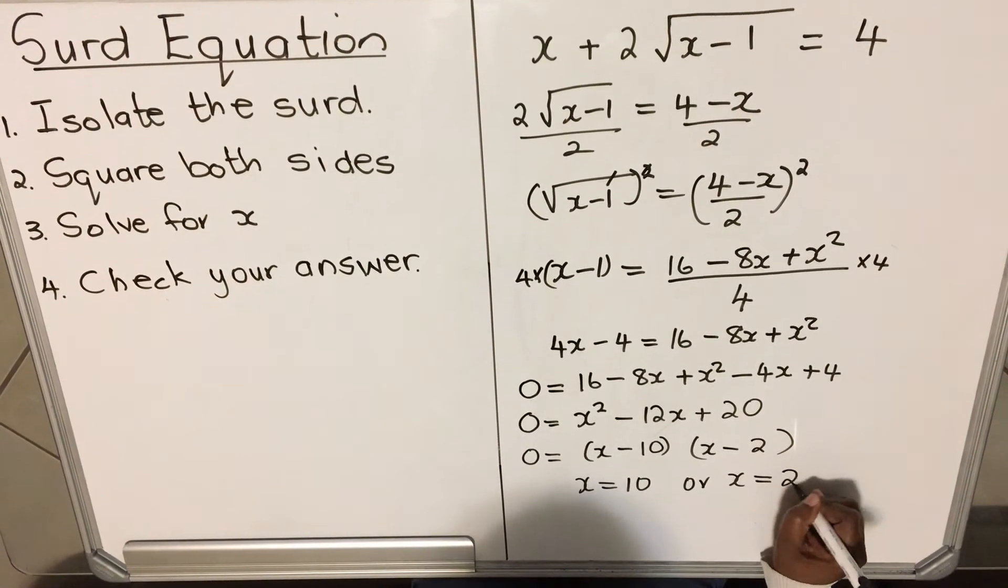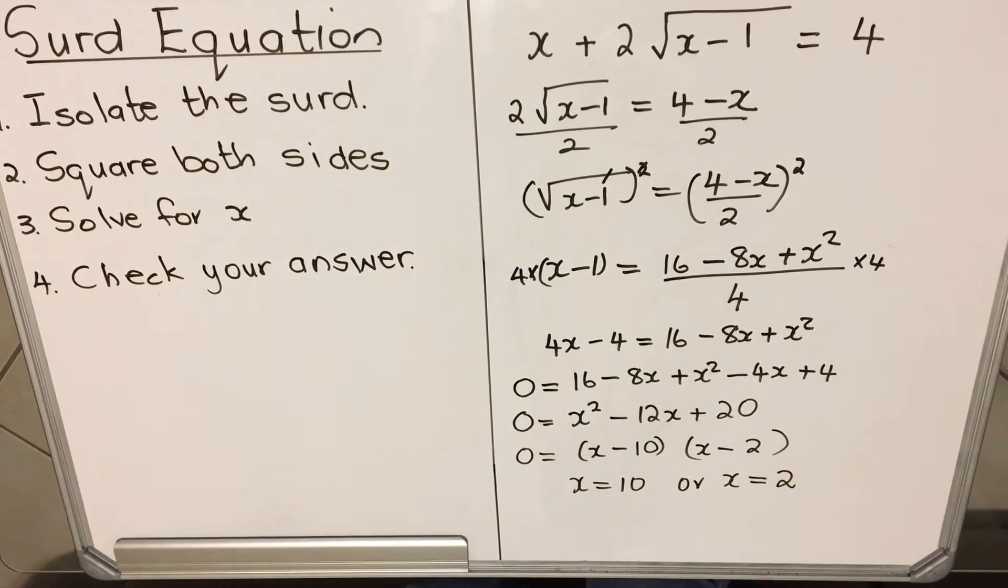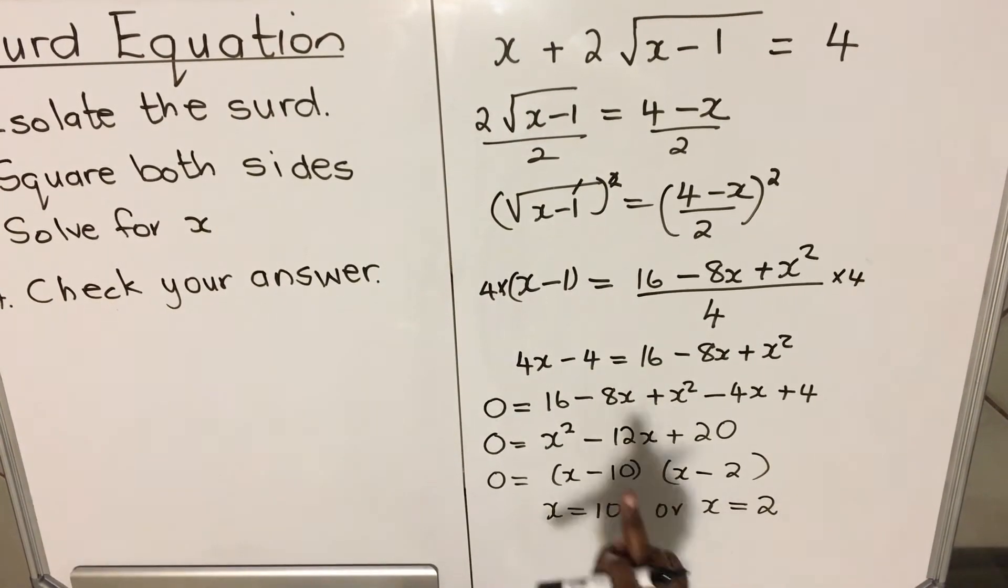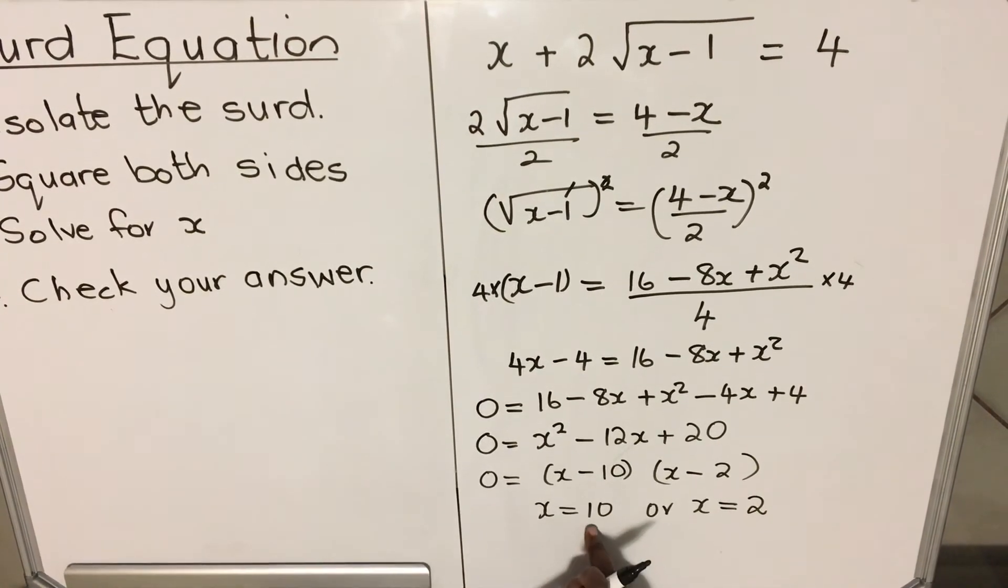Then the last part, they say check your answer. Let's do that. When you check your answer, you take the answers that you got, you put them in the original equation. One of them will be wrong, so let's start with 10.